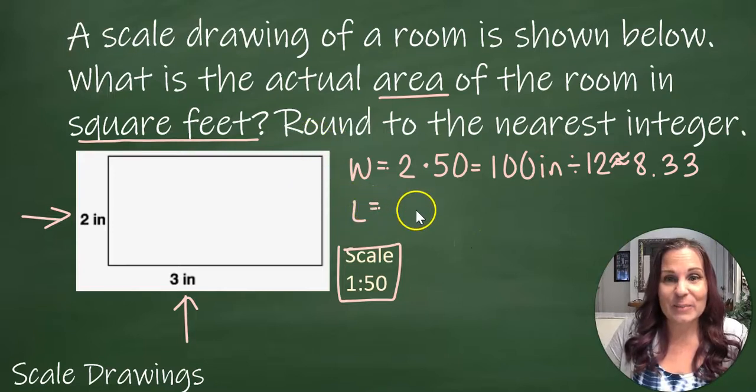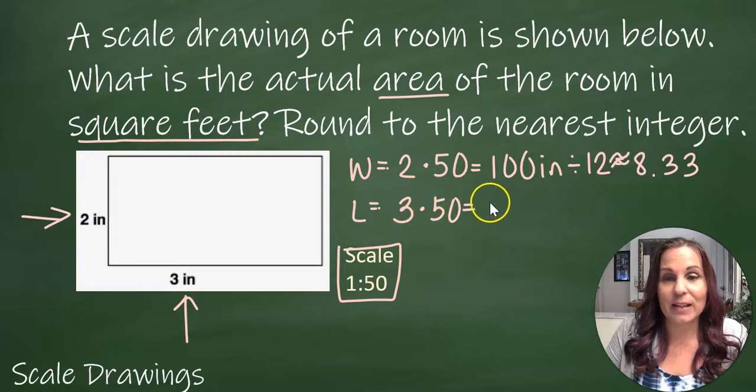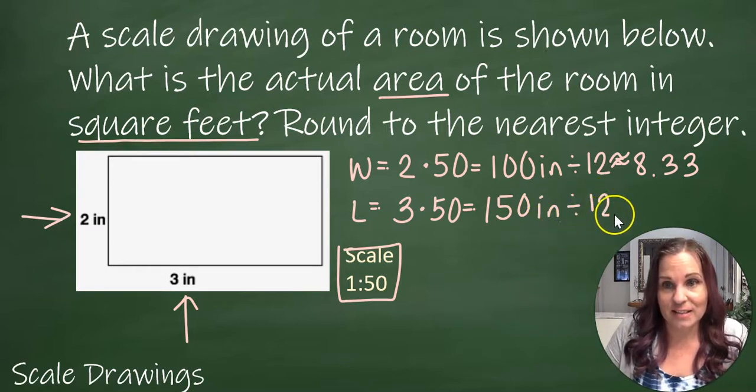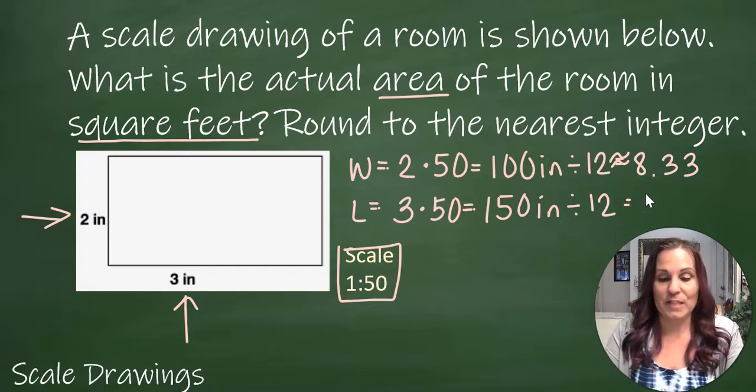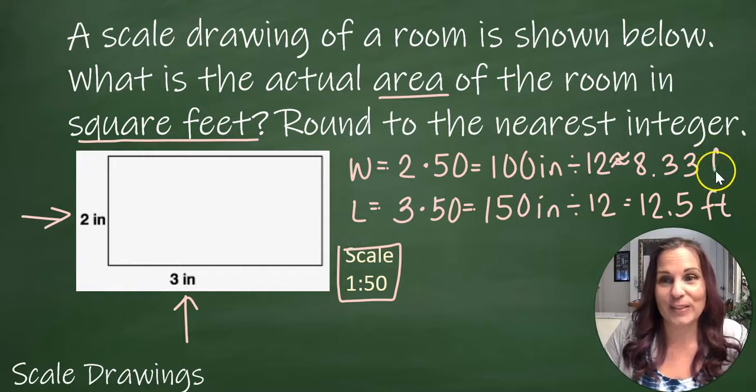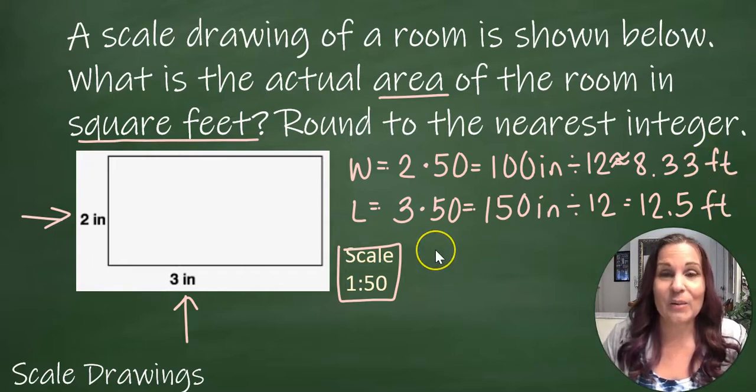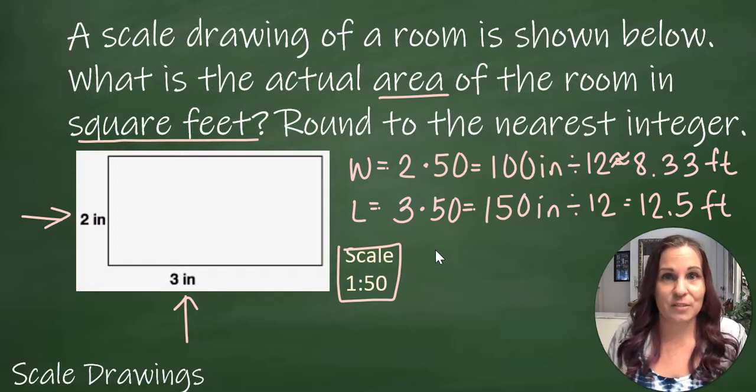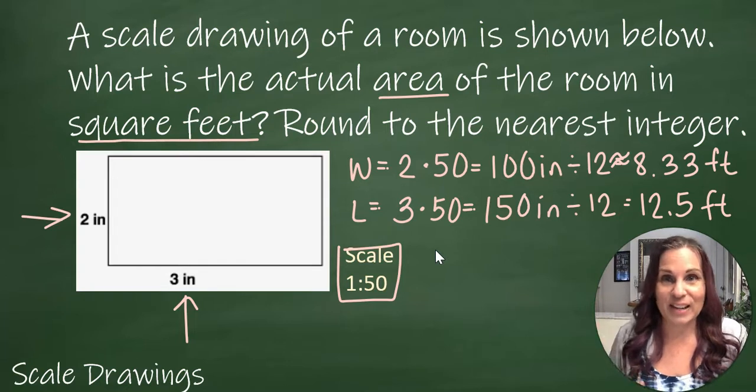Length: my original length is 3 inches. I'm going to multiply by 50 to get my actual length, which is 150 inches. And how many feet is that? 150 divided by 12 is 12.5, so this is 12.5 feet. Now I've enlarged my dimensions and converted to feet.